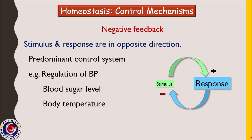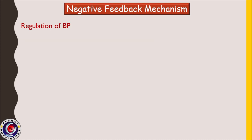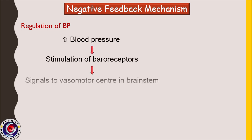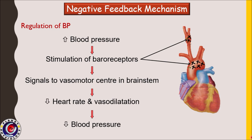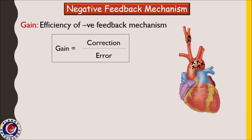Let us study the example of regulation of blood pressure. Whenever there is an increase in blood pressure, it stimulates baroreceptors and signals are sent to the vasomotor center. The center gives the command to decrease heart rate and also causes vasodilation. Thus, blood pressure is brought back towards normal. Here, the stimulus was an increase in blood pressure and the response was a decrease back towards normal — hence this is a negative feedback mechanism.